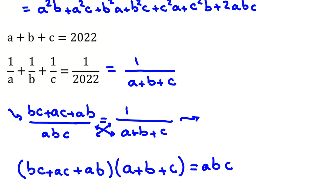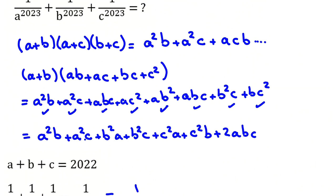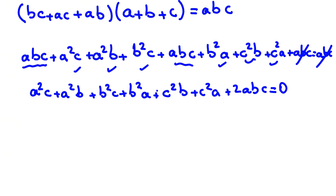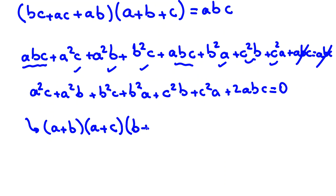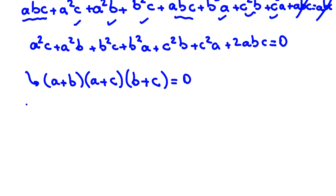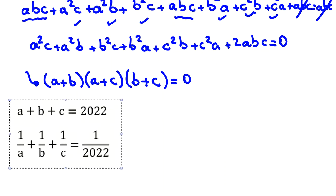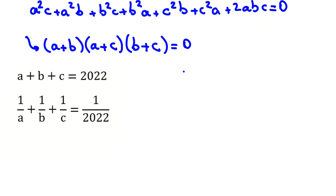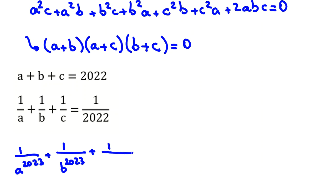If you pay attention, this expression is exactly the identity I showed earlier: A squared B plus A squared C plus B squared A plus B squared C plus C squared A plus C squared B plus 2ABC equals (A plus B)(A plus C)(B plus C). So we conclude (A plus B) times (A plus C) times (B plus C) equals zero. This means at least one of the factors is zero: either A plus B equals zero, A plus C equals zero, or B plus C equals zero.